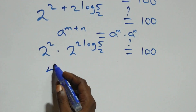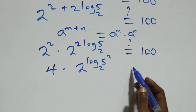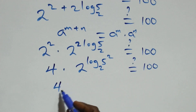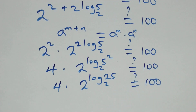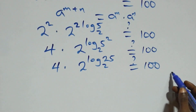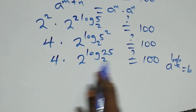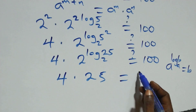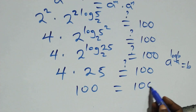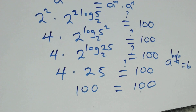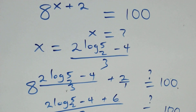Here 2 raised to power 2 is 4, and we reverse the exponent: 2 raised to power (2 log₂5) becomes 2 raised to power log₂(5²), which equals 2 raised to power log₂25. Applying the identity a raised to power log_a(b) equals b, we get 4 times 25, which equals 100. The left-hand side equals the right-hand side. Hence we conclude that x equals (2 log₂5 minus 4) all over 3 satisfies the given problem.